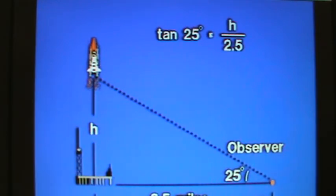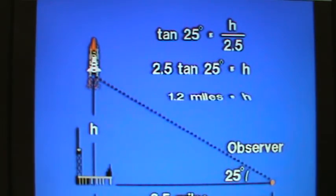Opposite over adjacent would be h over 2.5. Solving for h, we multiply by 2.5 on both sides. So the height is determined as the product of 2.5 and tangent 25 degrees. Multiplying, we find that height to be 1.2 miles.